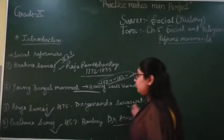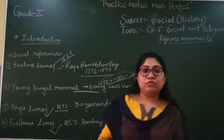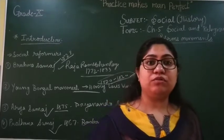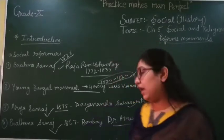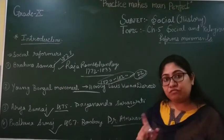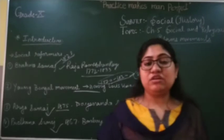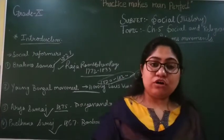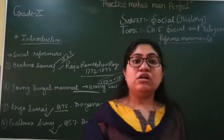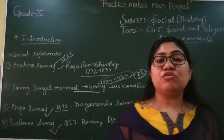The next one is Arya Samaj, started by Dayanand Saraswati in 1875. His original name was Mulshankar and he was from Kathiawar, Gujarat. At the age of 21 years, he left his home. In his childhood he did not like English education, so he was educated in Sanskrit, reading Vedas and Upanishads.